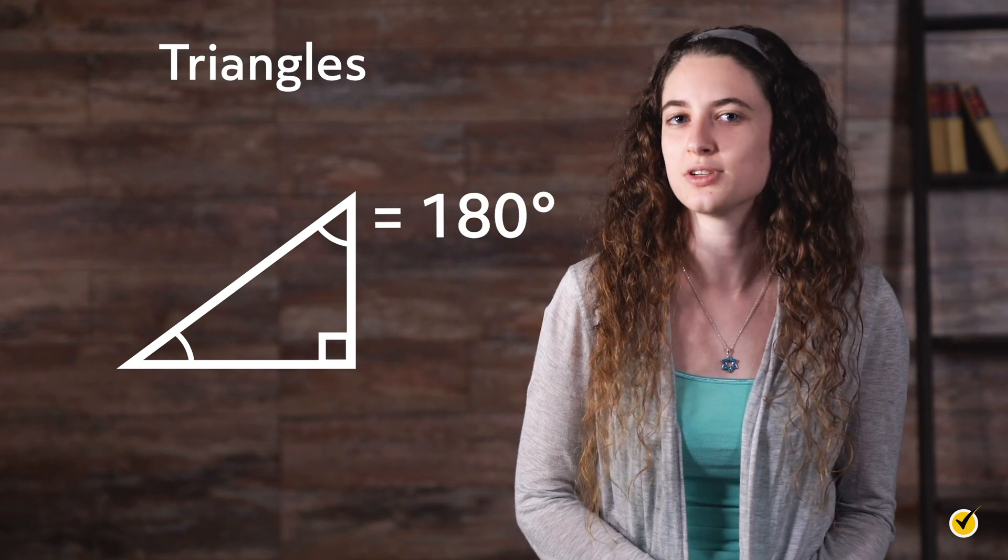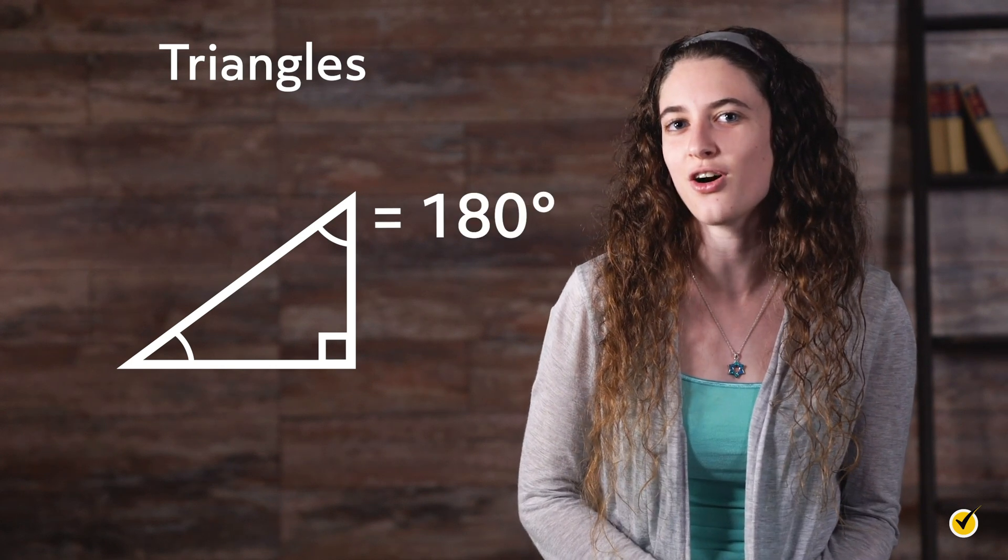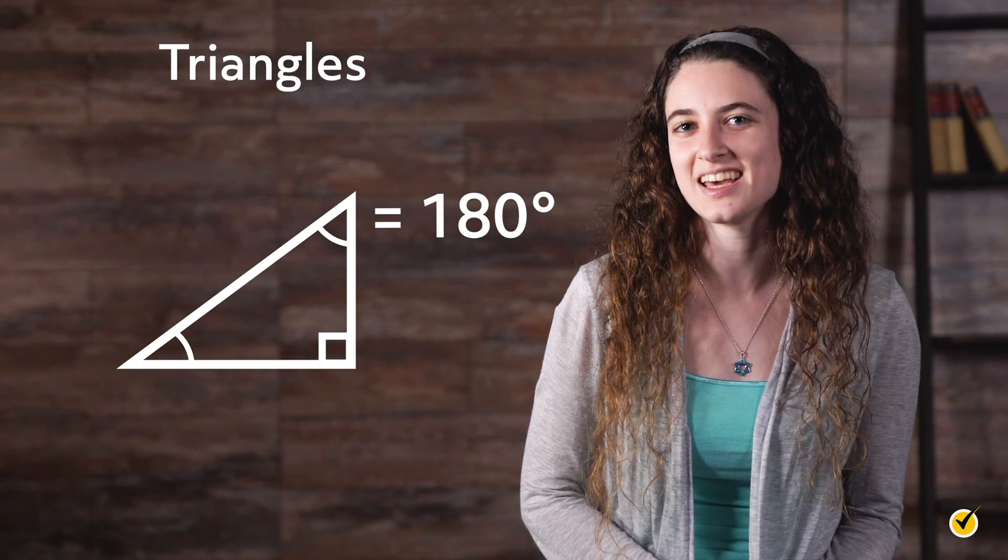In addition, a triangle has three interior angles, and the sum of these three angles are always 180 degrees. This is true for all triangles, including the six types we're looking at today.